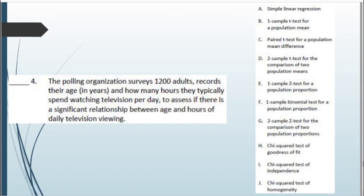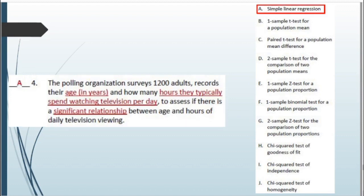Scenario 4: A polling organization surveys 1,200 adults, records their age and how many hours they typically spend watching TV, and assesses if there is a significant relationship between age and hours of daily television viewing. This is simple linear regression. We have two quantitative variables — age and hours watching TV — and we want to assess the relationship between them, which aligns with the definition of linear regression.